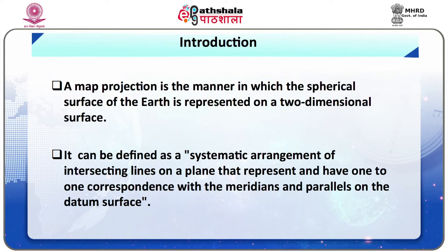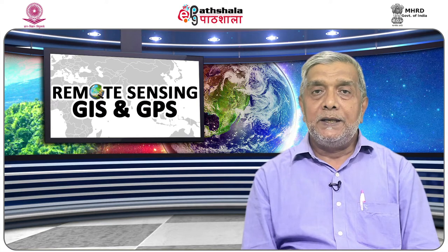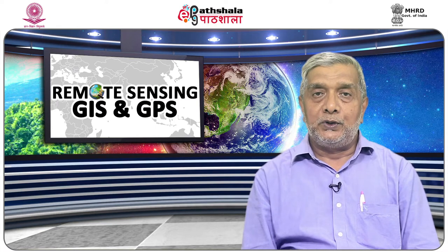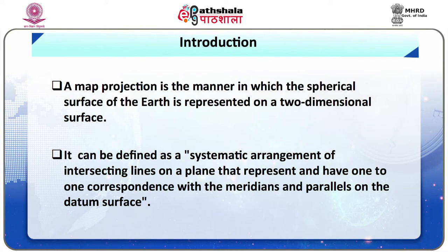A map projection is the manner in which the spherical surface of the earth is represented on a two-dimensional surface. The term projection comes from the notion of placing a light source inside a transparent globe and projecting shadows of the meridians and parallels onto a sheet of paper placed tangent to the globe. It can be defined as a systematic arrangement of intersecting lines on a plane that represent and have a one-to-one correspondence with the meridians and parallels on the datum surface.